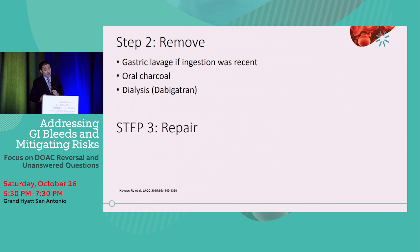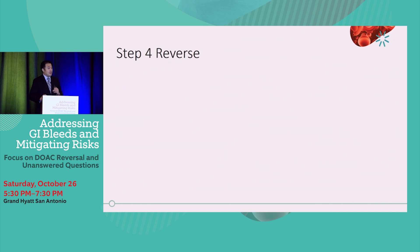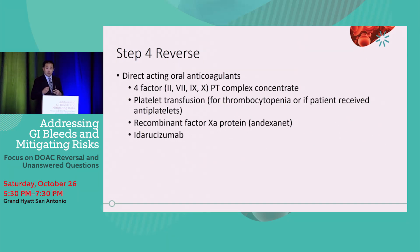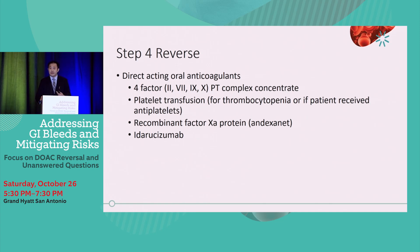Step three: Repair — assess the need for surgery or endoscopy. Step four: Reverse. This is where we decide whether to use reversal agents for these direct oral anticoagulants. Consider four-factor PCC complexes such as K-Centra. Platelet transfusions for patients with thrombocytopenia or those who recently received antiplatelet medications. Recombinant factor Xa protein — andexanet alfa. Or idarucizumab, which is very specific for Pradaxa.